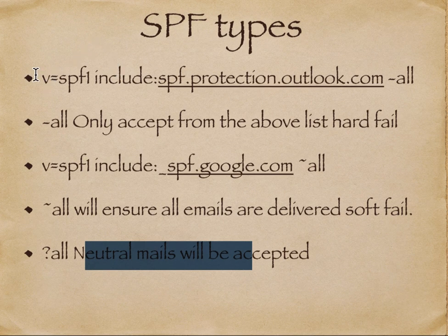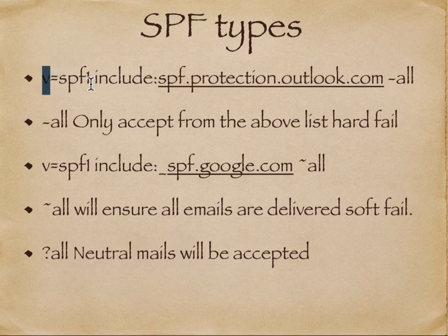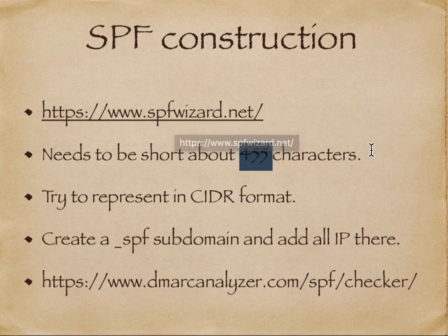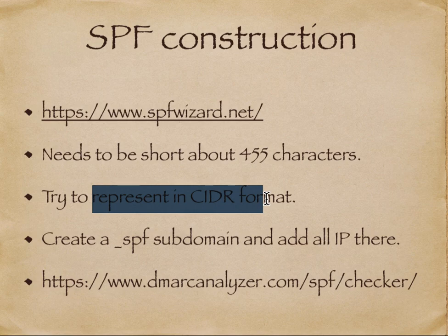The 'v' stands for version — SPF version 1. The text record cannot exceed 455 characters, so it needs to be short and sweet. You can use a website like spfwizard.net to create your own text record. If there are several IPs, represent them in CIDR format so you can list an entire netblock instead of individual IPs. It is also advisable to create an underscore SPF subdomain and add all IPs there.